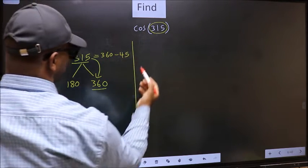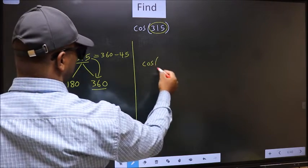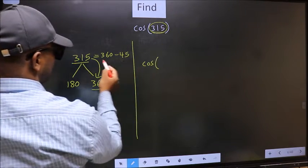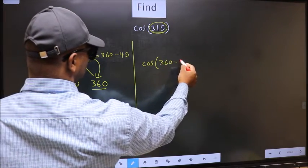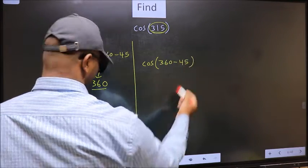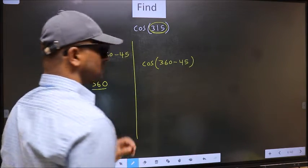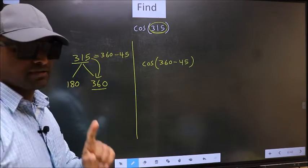So this will become cos, and in place of 315, we should write 360 - 45. This is your step 1.